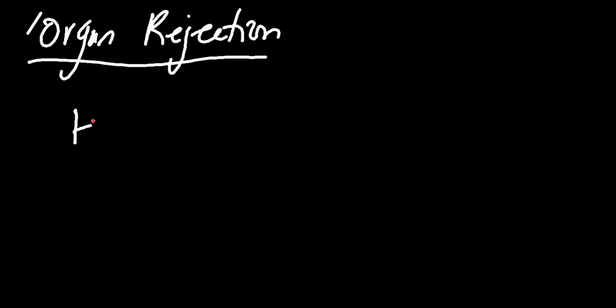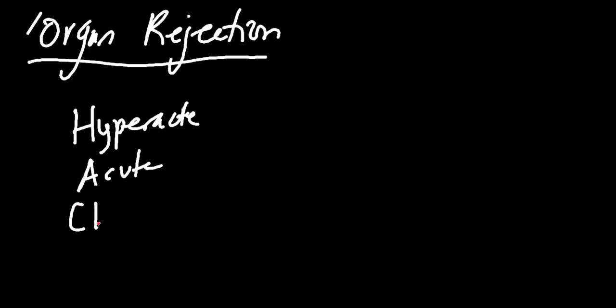Let's finish up our immunology section on organ rejection. So what is organ rejection? Let's say I just transplanted a kidney. There are three main types of rejection, and there's also a disease we'll talk about at the end. There's going to be hyper acute rejection, acute rejection, and chronic rejection.